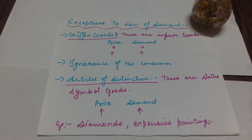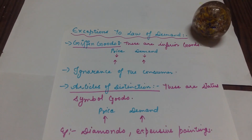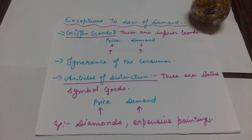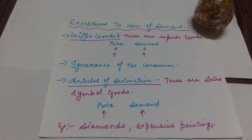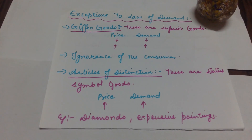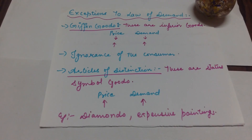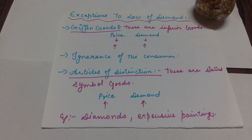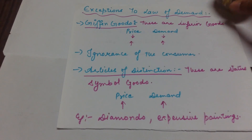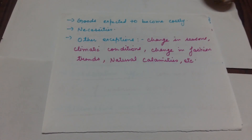Another exception is ignorance of the consumer — sometimes consumers buy a commodity even when the price is actually high. Articles of distinction are status symbol goods, for example diamonds, expressive paintings, and carpets. In this case, if the price of the commodity is increased, demand is also increased because it is a status symbol. So the Law of Demand does not apply to this type of goods.